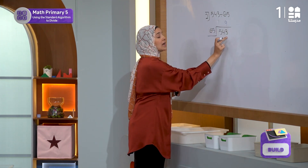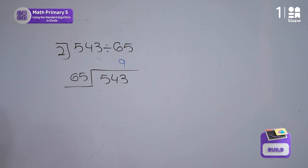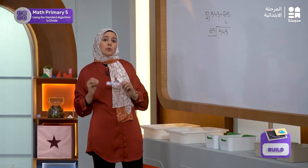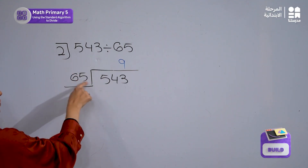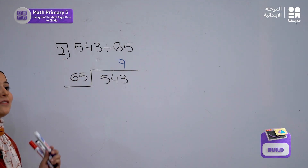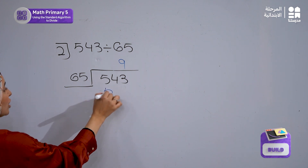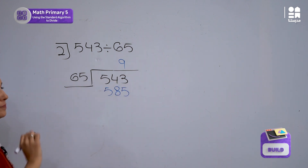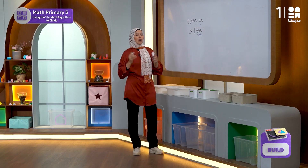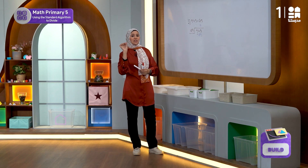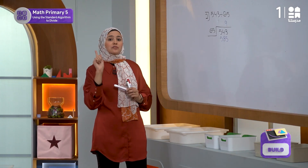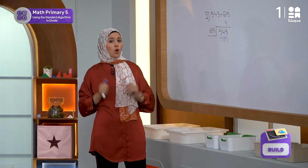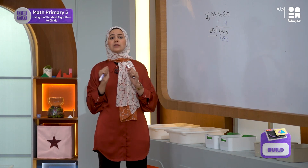I have to write it over the ones place because I took three digits. Now let's check: when I multiply, nine multiplied by 65 is equal to 585. But I notice something is wrong.